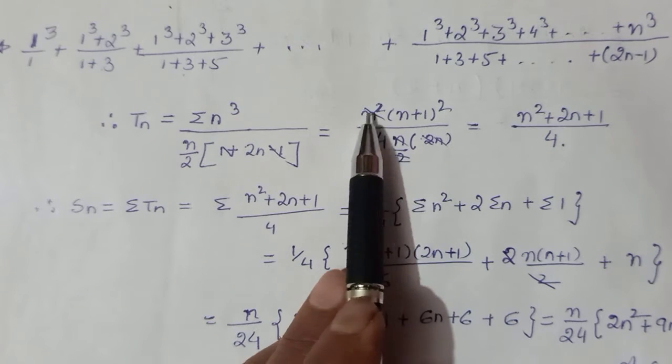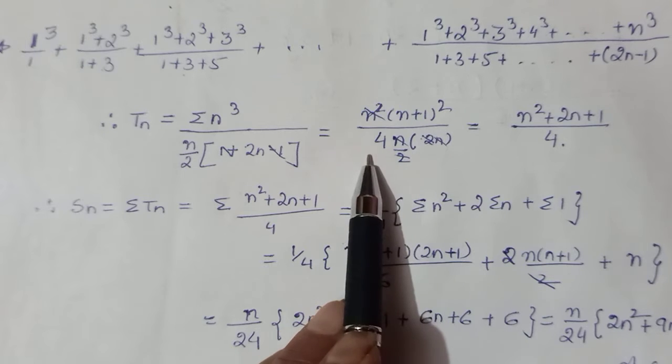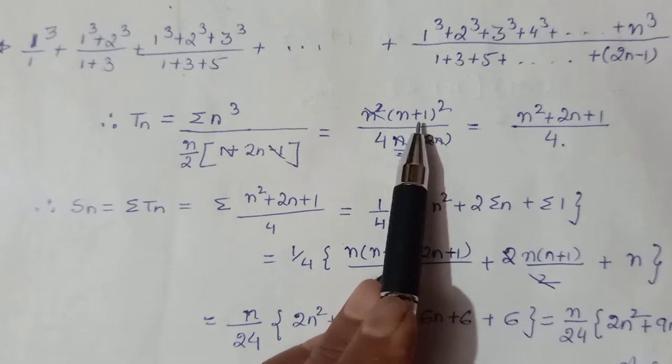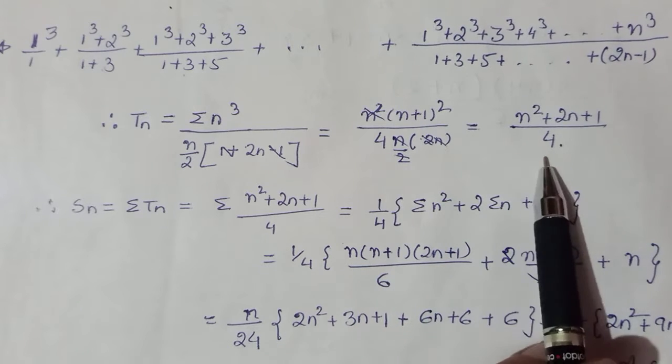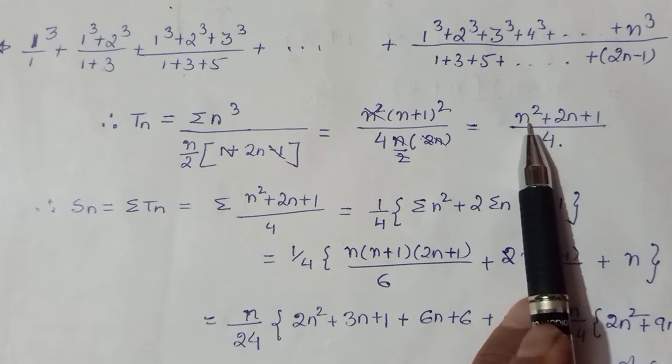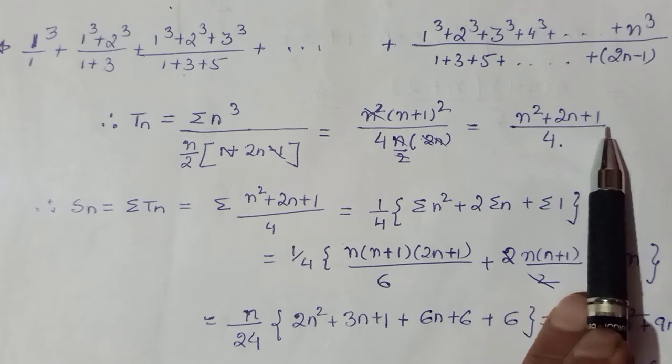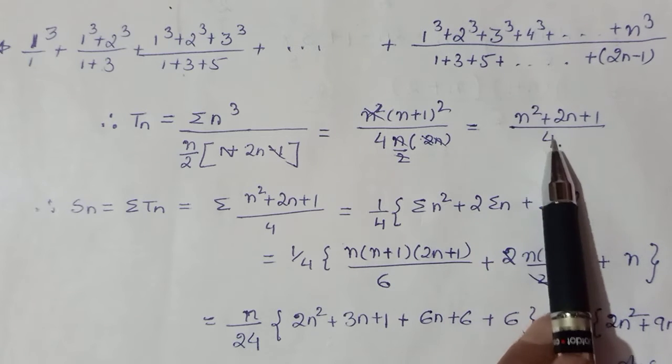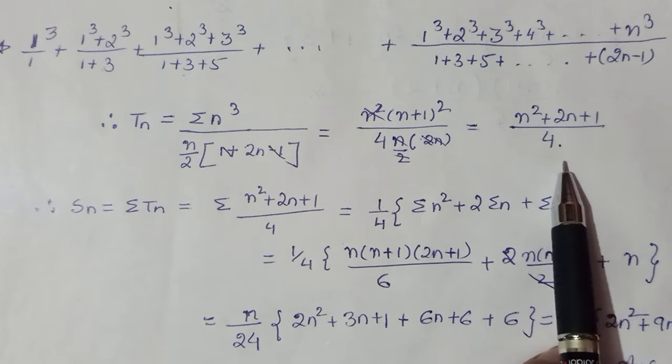Now Σn³ has your formula n²(n+1)²/4. So n² numerator ka and denominator ka bhi sab balance ho ja raha hai. At the end you are only left with (n+1)² which you can open as n² + 2n + 1, (a+b)² upon 4.